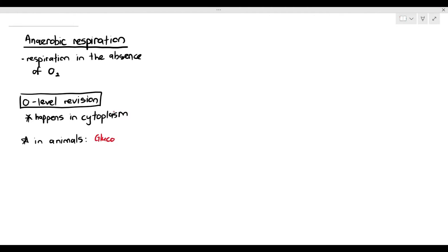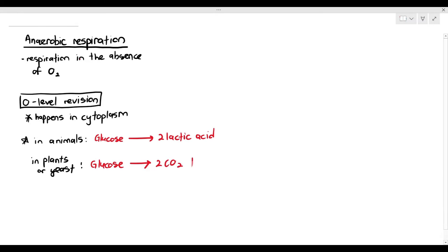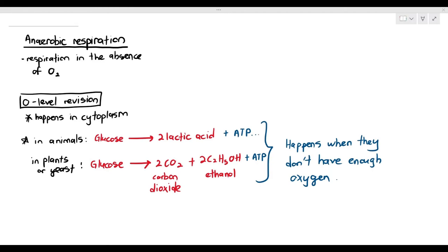In animals, the glucose is broken down into something called lactic acid — two molecules of it. In plants or yeast, the glucose goes through a slightly different pathway where it's broken down into two molecules of carbon dioxide and two molecules of ethanol, C2H5OH. This only happens when the cells do not have enough oxygen to work with, and they also produce a little bit of ATP.